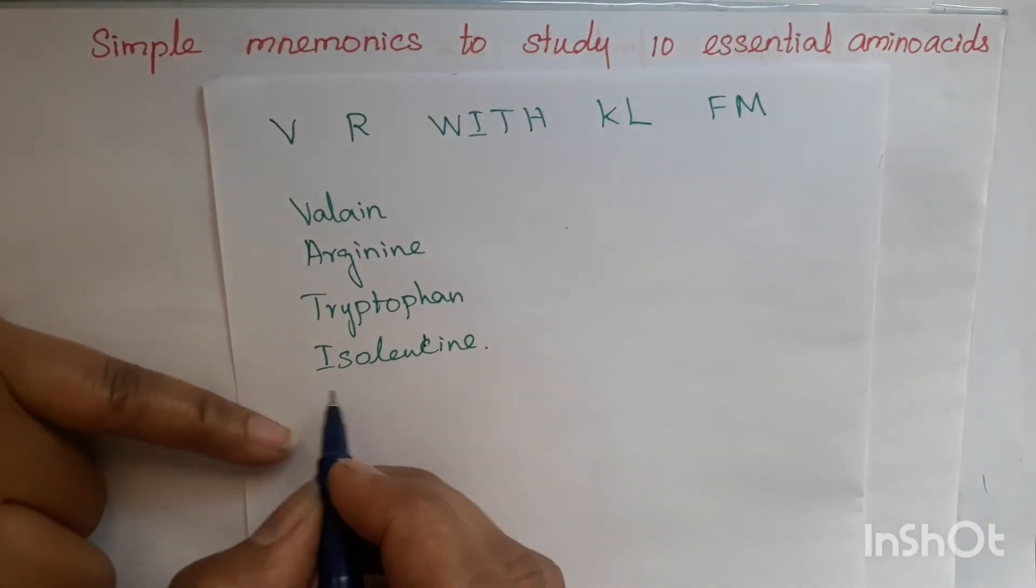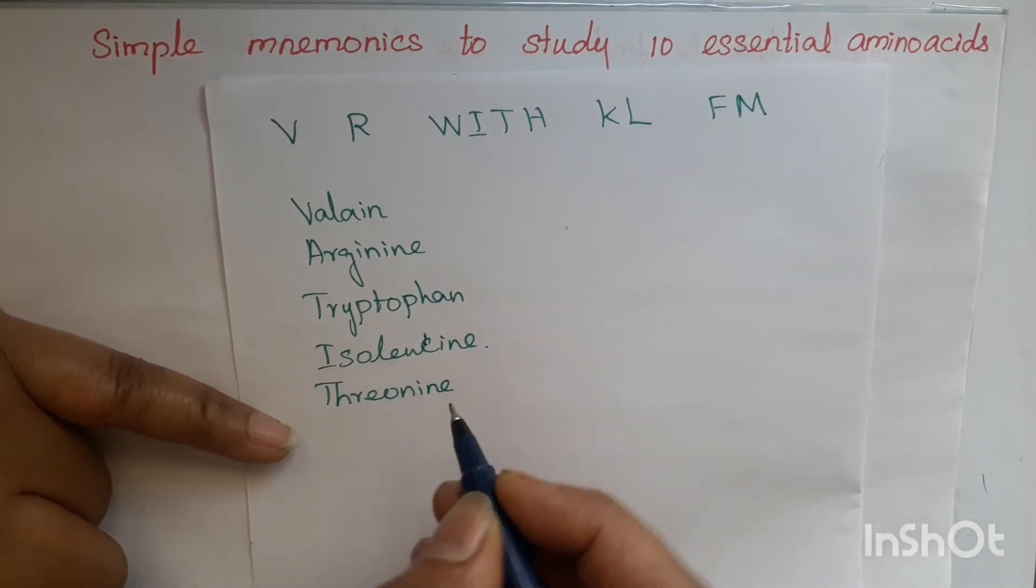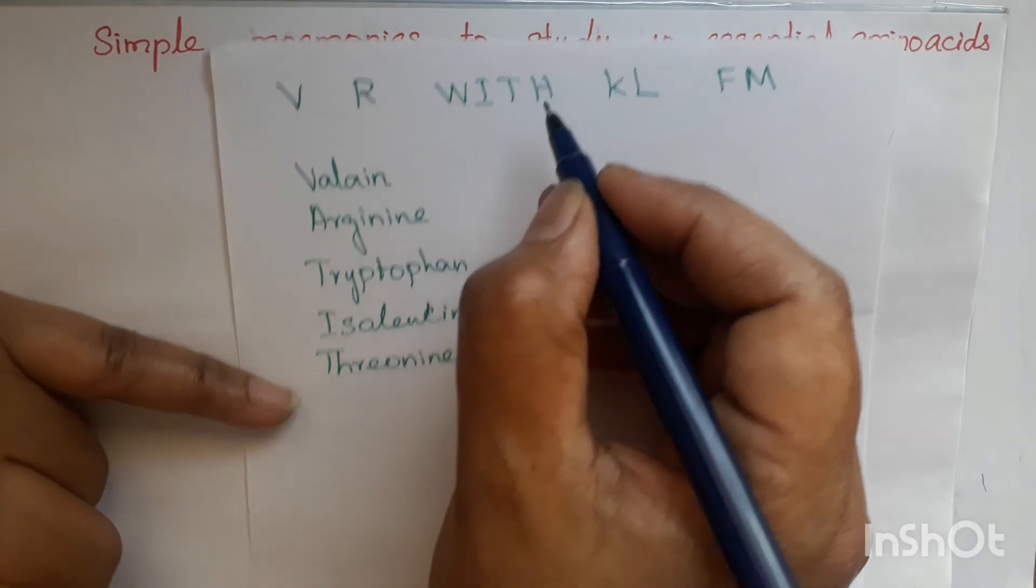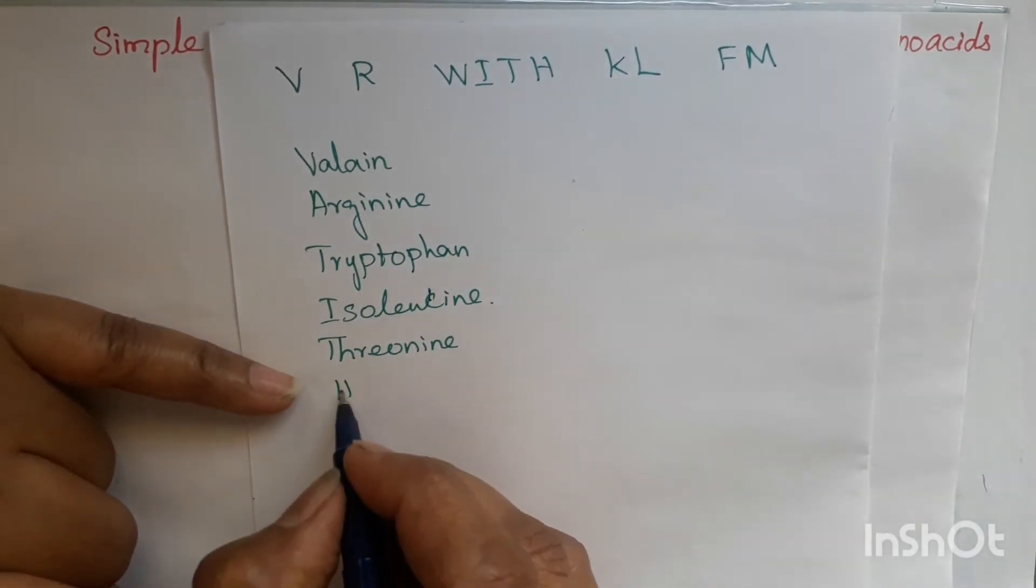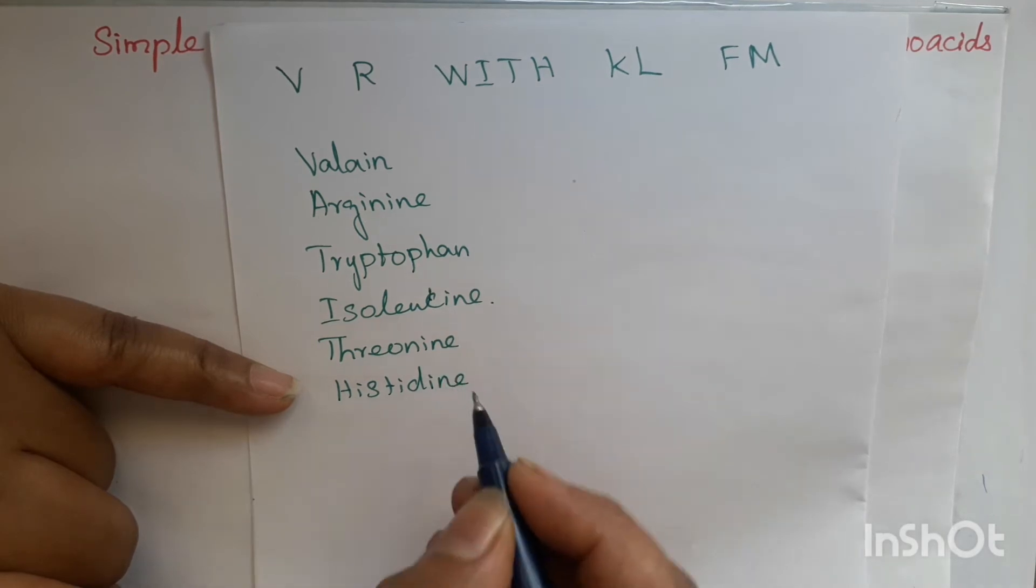T for Threonine. T-H-R-E-O-I-N-E. Then, H for Histidine. H-I-S-T-I-D-I-N-E.